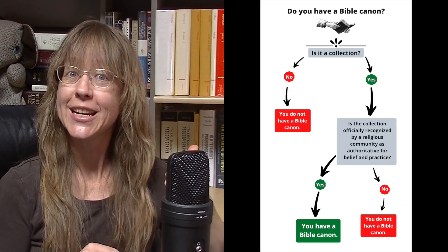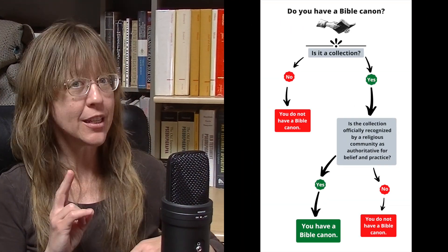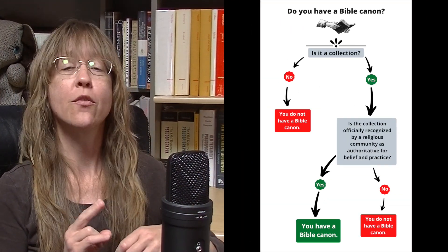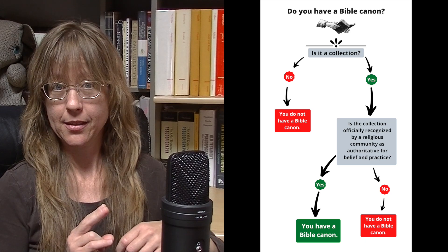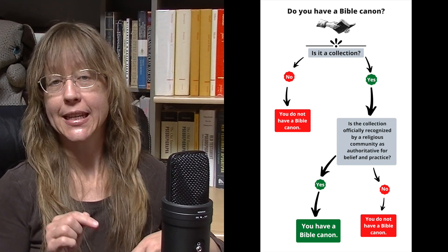In the first video we covered step one. We saw that there are two basic aspects to what a Bible canon is: it has to be a collection of writings, and that collection has to be officially recognized by a religious community as authoritative for their religious beliefs and practices. I created a chart to help people understand these two aspects of Bible canons — you can download a copy by following the link in the description. We also clearly defined what a collection of writings is by distinguishing between the idea of a collection and the idea of a category.